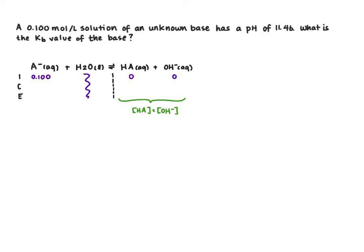The first thing we're going to do is take our pH and turn it into pOH, because that will allow us to calculate hydroxide. So 14 minus 11.46 equals 2.54. So the pOH of our base solution is 2.54.